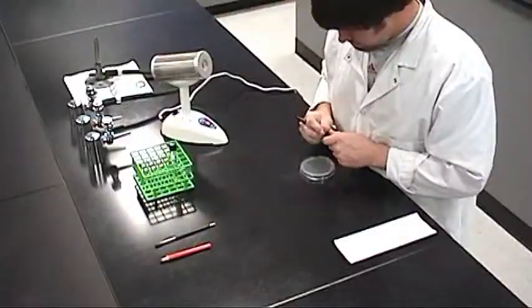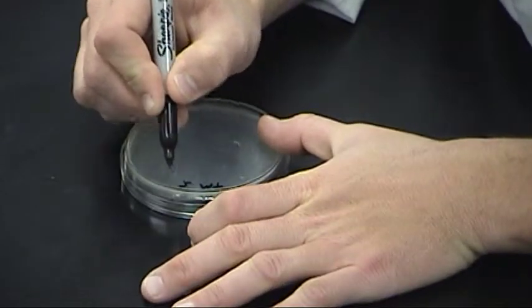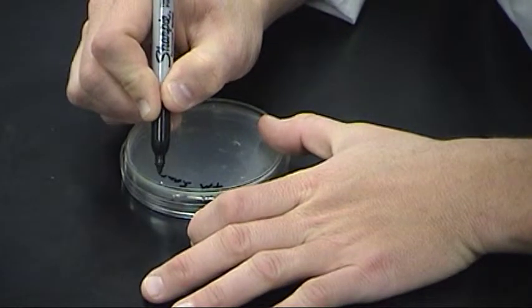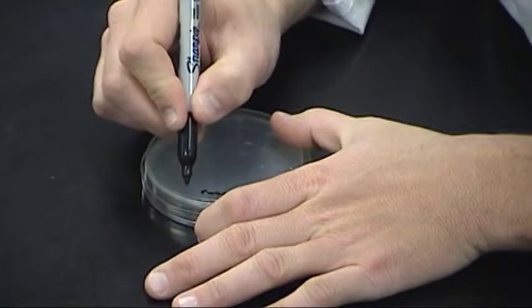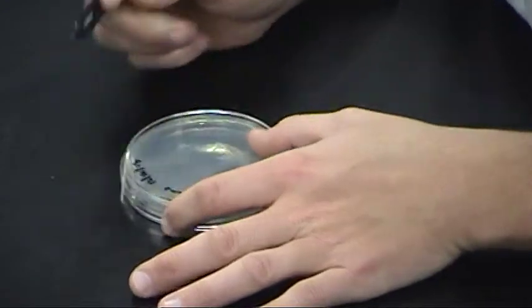First, use a marking pen to label the back of the plate with your initials, the specimen source, and the date. Print close to the edge so the label does not interfere with reading the plate after inoculation.